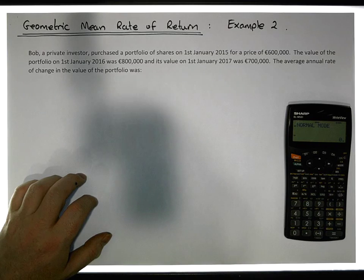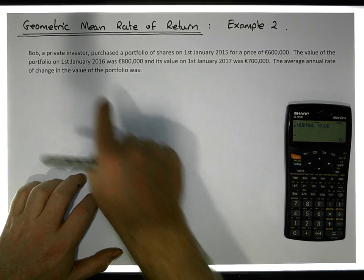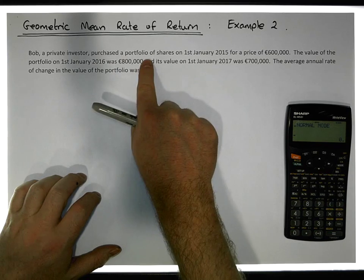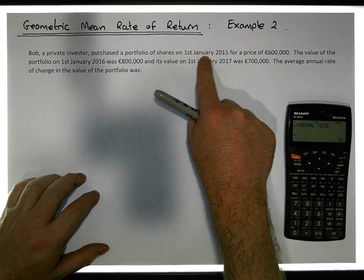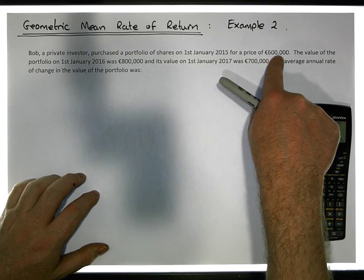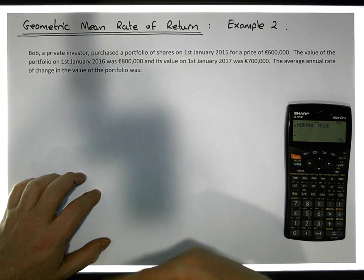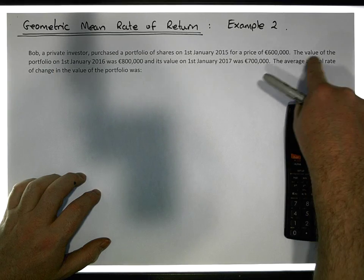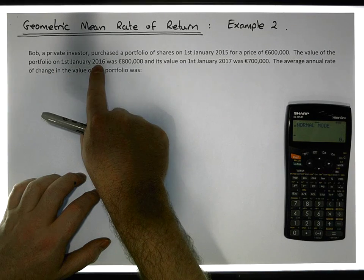Let's have a look at the scenario, and thanks Stephen Walsh for these scenarios. Bob is a private investor and he's purchased a portfolio of shares on the 1st of January 2015 for a price of 600,000 euros.